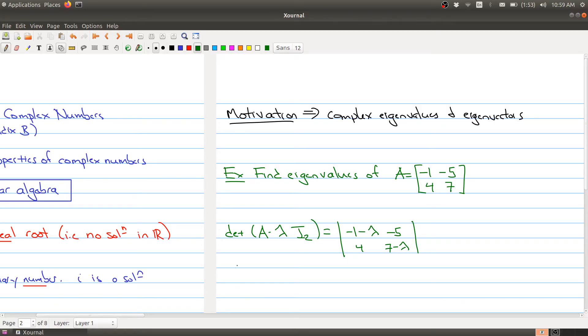Let's finish calculating it. We have (-1 - lambda)(7 - lambda) minus (-20). Expanding this out, we have lambda squared minus 6 lambda plus 13. Now I want to set this equal to zero and find its roots.